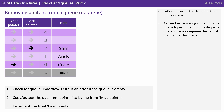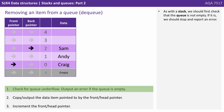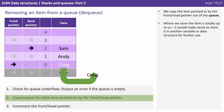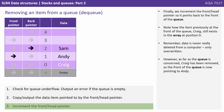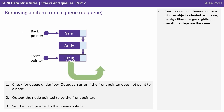Let's remove an item from the front of the queue. Remember, removing an item from a queue is performed using a dequeue operation — we dequeue the item at the front of the queue. As with a stack, we should first check the queue is not empty; if it is, stop and report an error. We copy the item pointed to by the front or head pointer out of the queue — where we store it is up to us. Finally, we increment the front or head pointer so it points to the new front of the queue. Note how the item previously at the front, Craig, still exists in the array at position zero. Data is never really deleted, only overwritten. As far as the queue is concerned, Craig has been removed as the front now points to Andy. Using an object-oriented technique, the algorithm again changes slightly but the steps are basically the same.